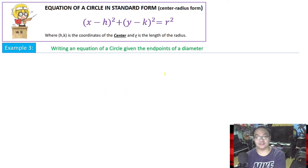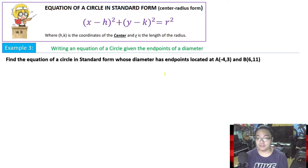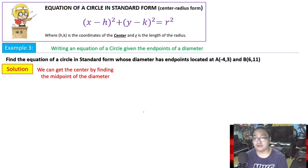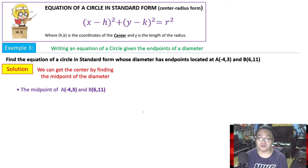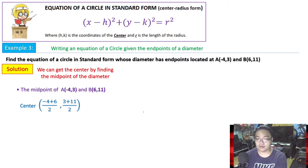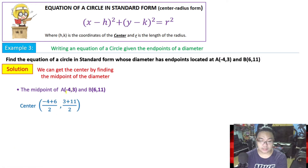Example 3: Write an equation of a circle given the endpoints of a diameter. We have a circle whose diameter endpoints are point A at (negative 4, 3) and point B at (6, 11). We find the center by using the midpoint formula: (x₁ + x₂)/2 for the x-coordinate and (y₁ + y₂)/2 for the y-coordinate. Substituting: (negative 4 + 6)/2 = 2/2 = 1 and (3 + 11)/2 = 14/2 = 7. Therefore the center is at (1, 7).